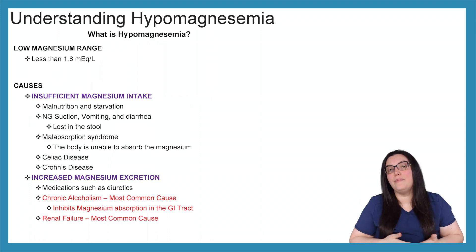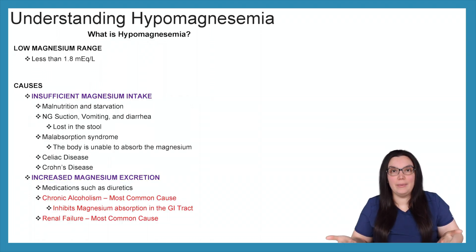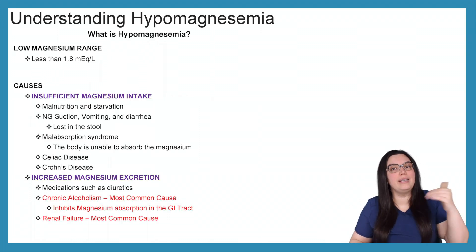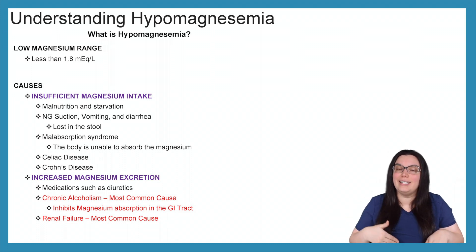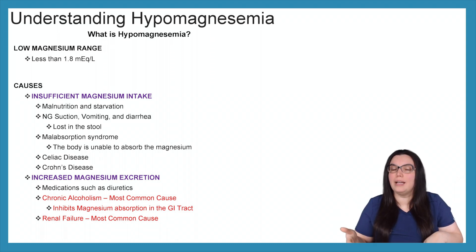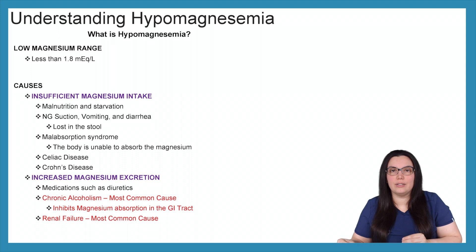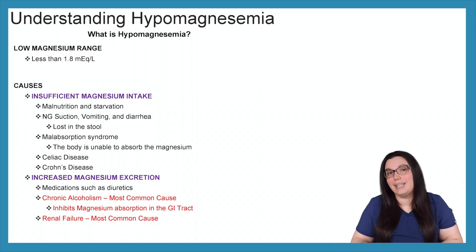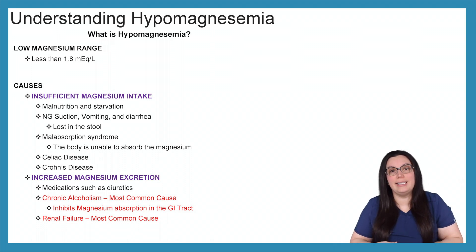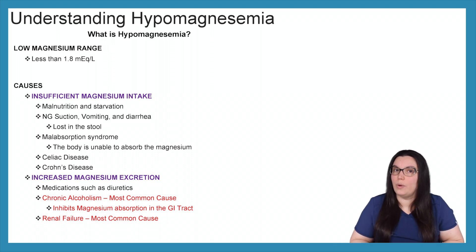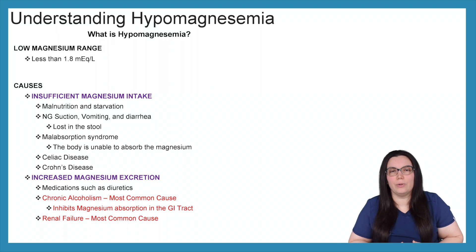So what is hypomagnesemia? Hypo means low, and magnesemia means magnesium in the blood. So we have low magnesium in the blood — low serum magnesium levels — that's going to be less than 1.8 milliequivalents per liter.